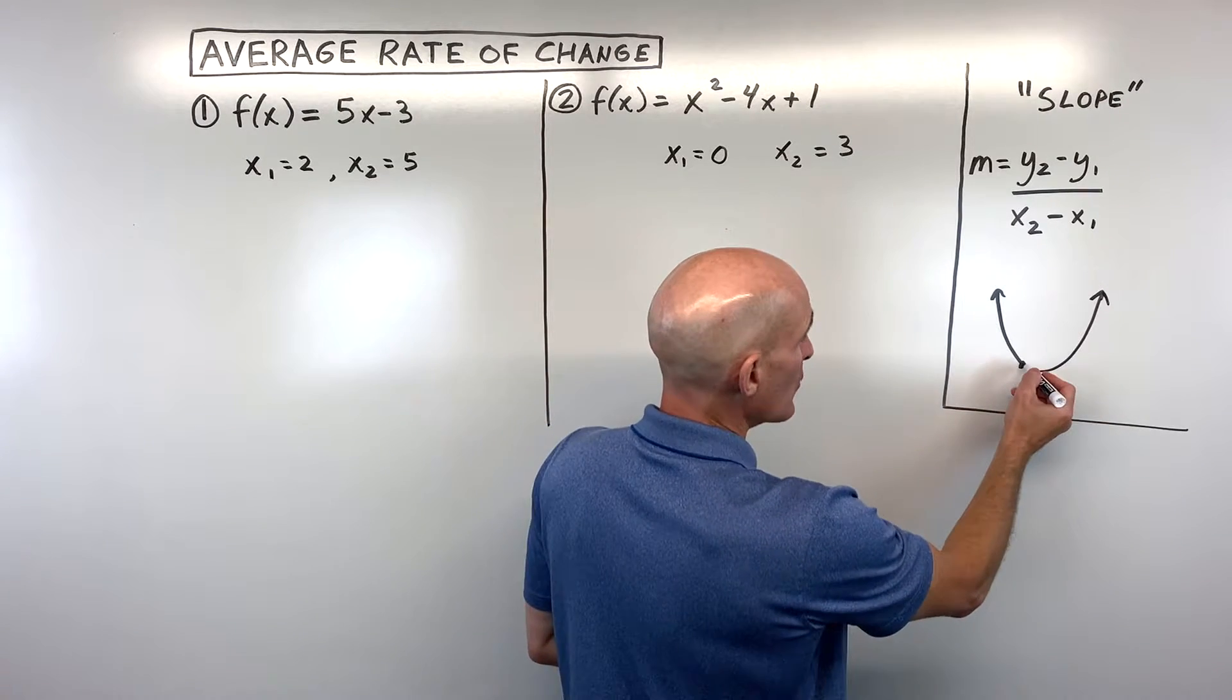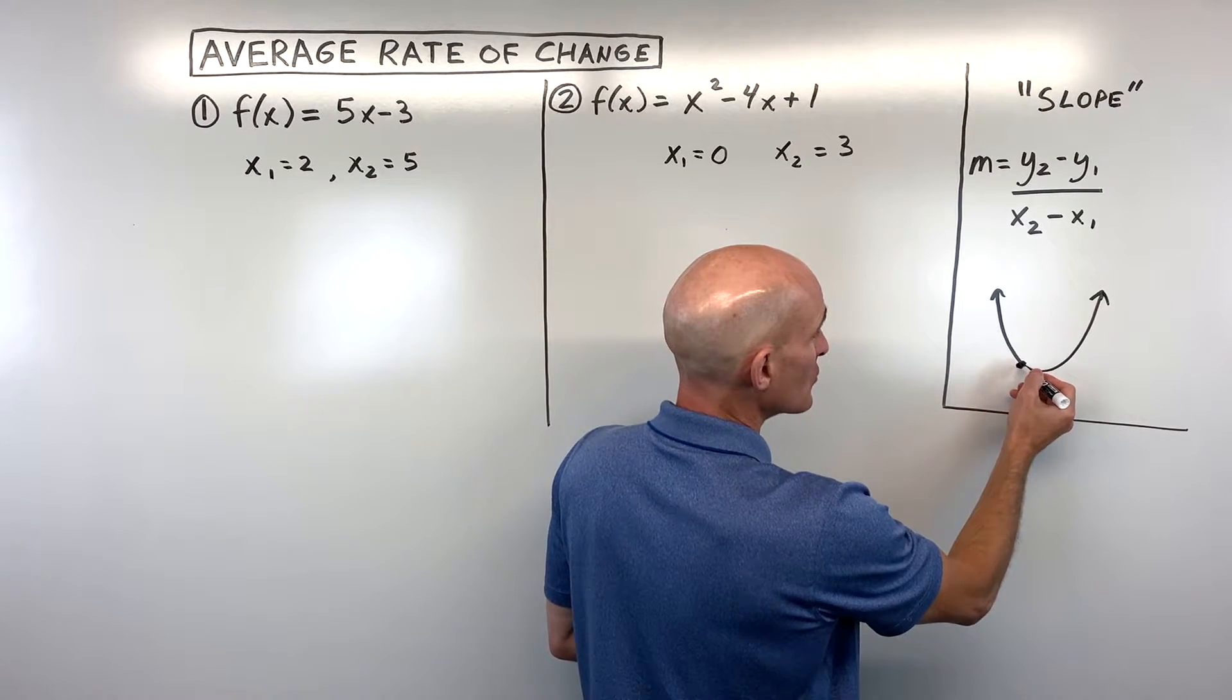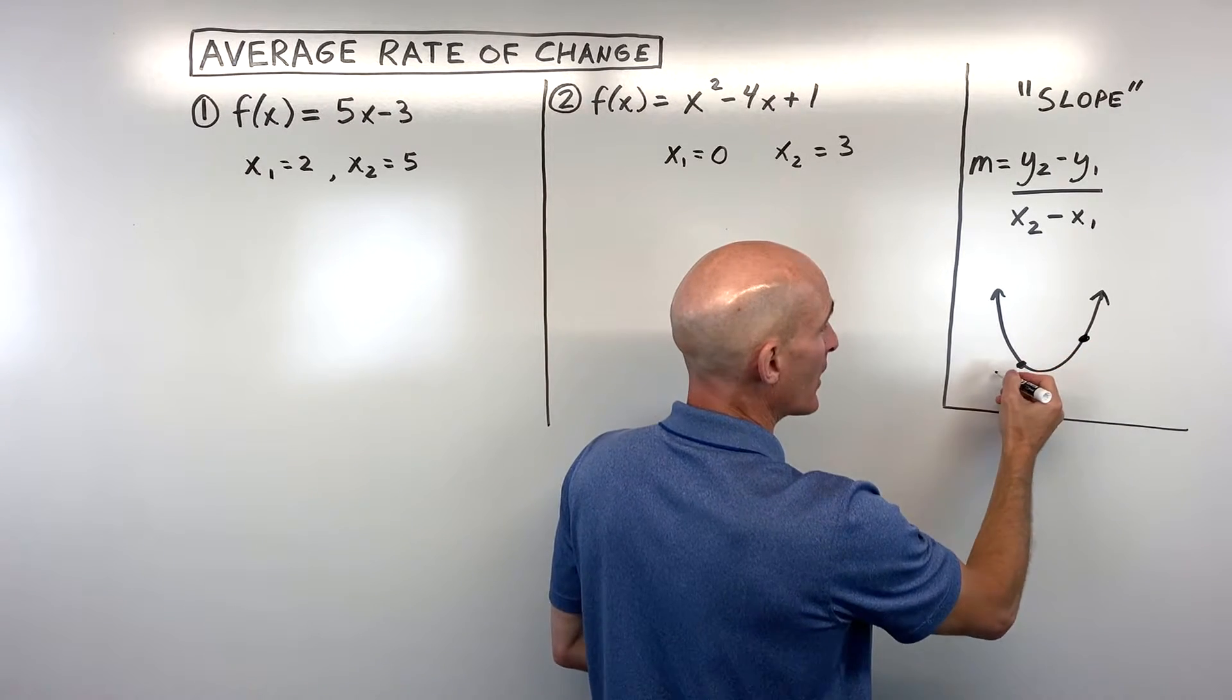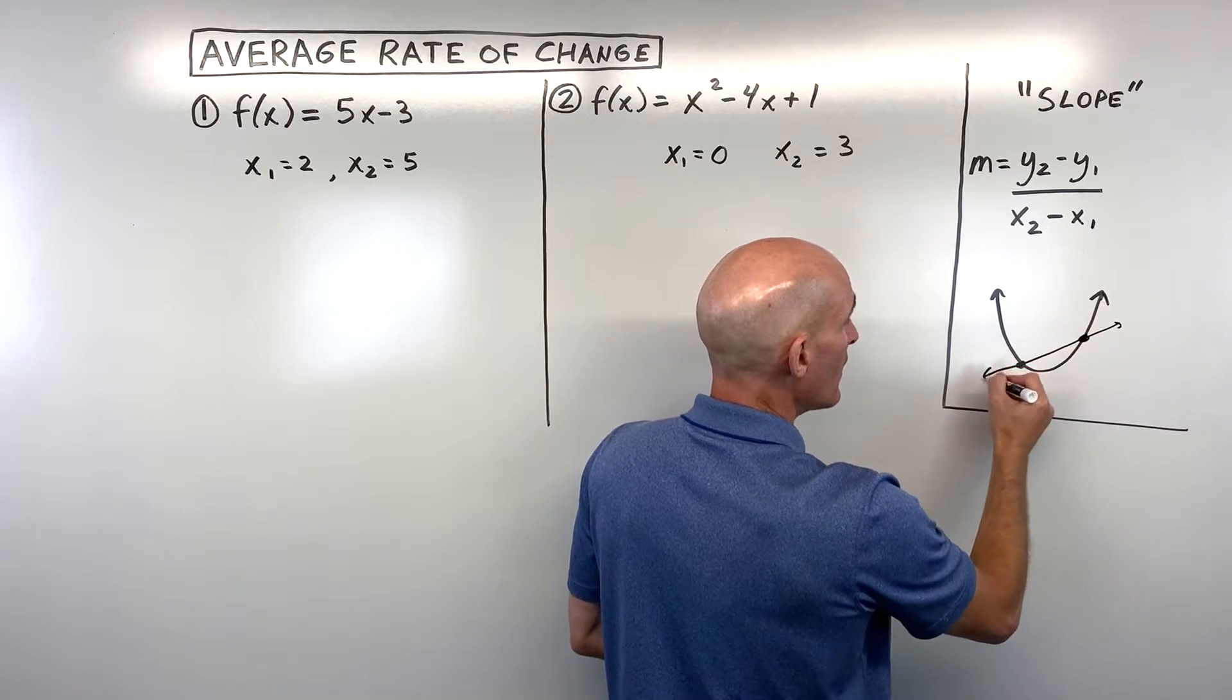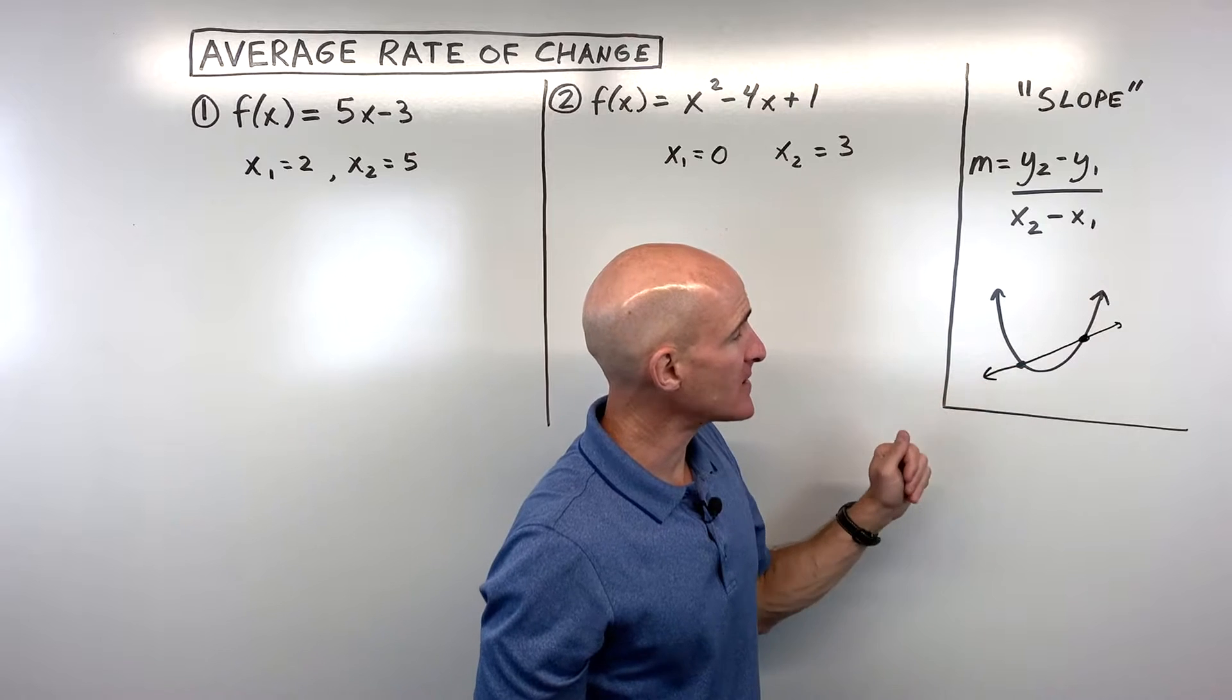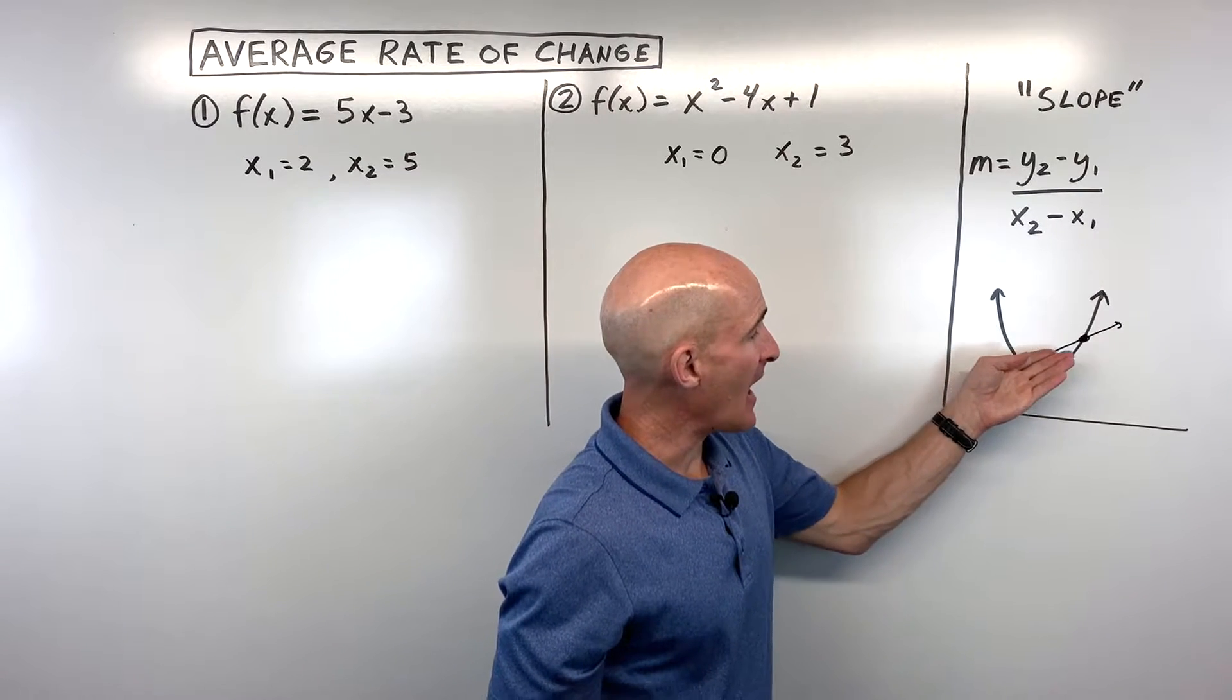But let's just say for example, they say what's the average rate of change from this x value over to this x value, meaning from this point to this point. Well, this is the slope of the secant line. See how it cuts across the graph at two points? That's our secant line. And that's the average rate of change.